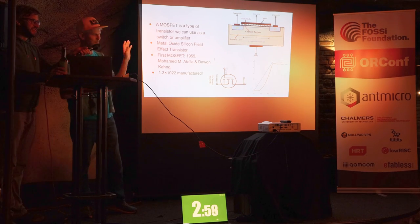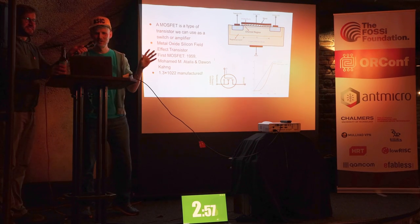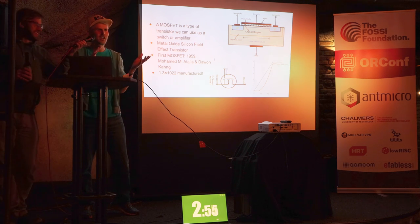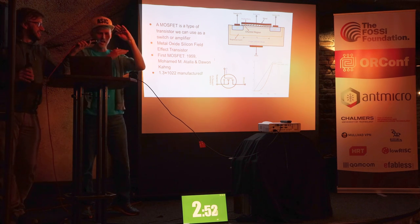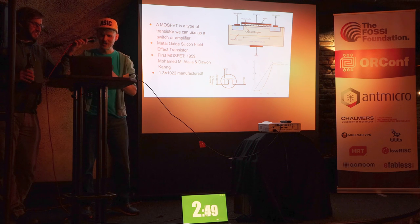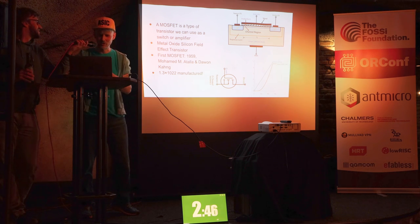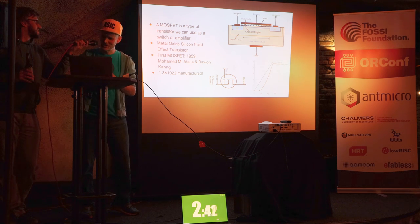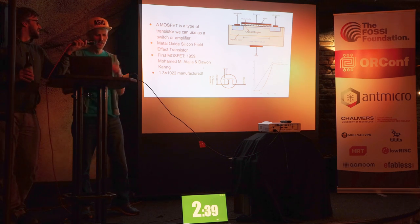This is MOSFETs. We all know a bit about MOSFETs — they work like a switch or an amplifier. We've got a gate on the top. When you put an electric field, it allows the current to flow from the source to the drain. This is what it looks like on the symbol, and here's the graph. As the gate voltage increases, we see this exponential current rise.